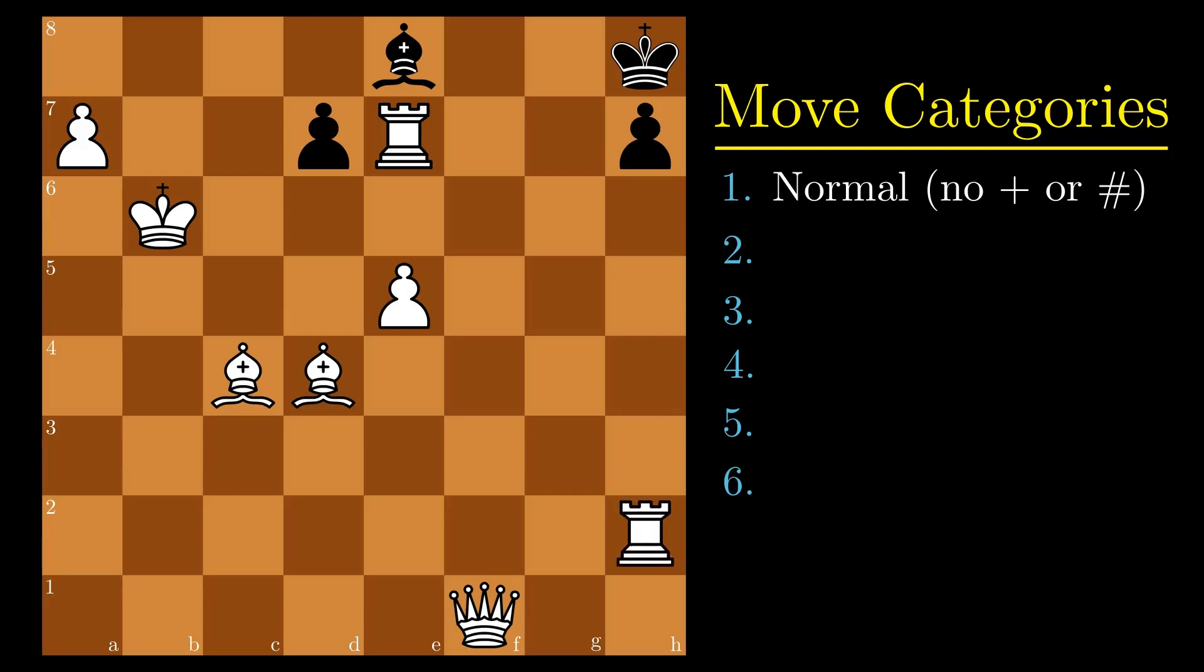There are normal moves without capture, check, or checkmate. Pawn promotions to each of the four pieces are included in this and the other five categories. Capture without check or checkmate, and normal move with check.